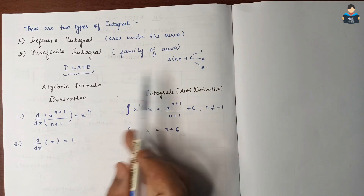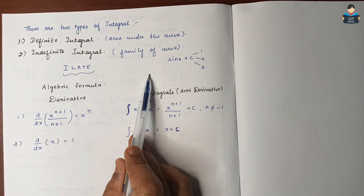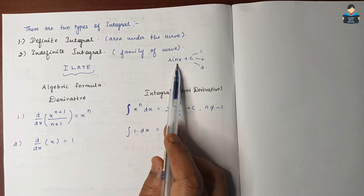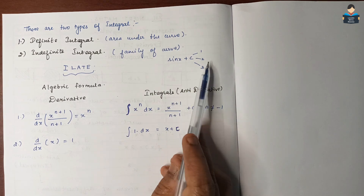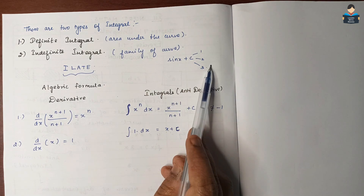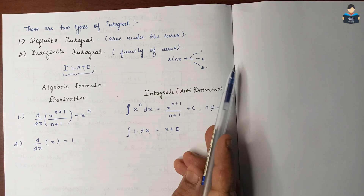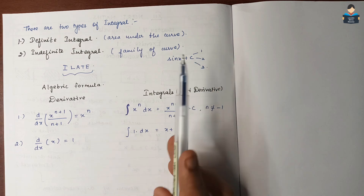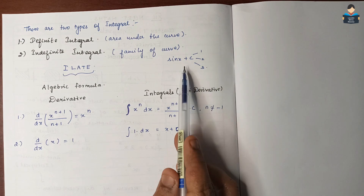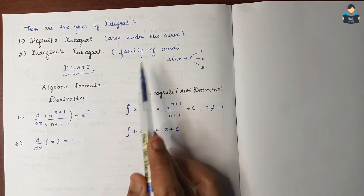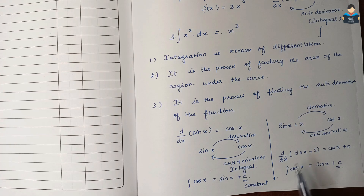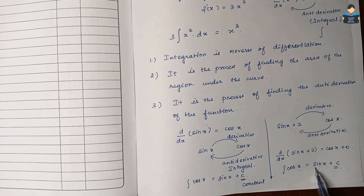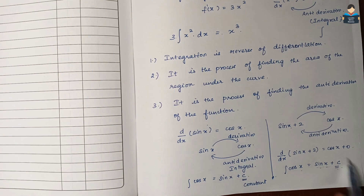The integral of sin x dx equals minus cos x plus C, and the integral of cos x dx equals sin x plus C.